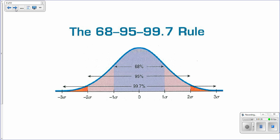This rule says that roughly 68% of our data will fall within one standard deviation of our mean, and roughly 95% of our data will fall within two standard deviations of our mean.